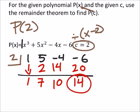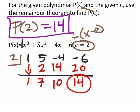So, this is our remainder right here, meaning that P of 2 would be 14. So, what this is really telling us is that if I replaced all my x's in the equation with 2, I would get 14. Let's look at that.